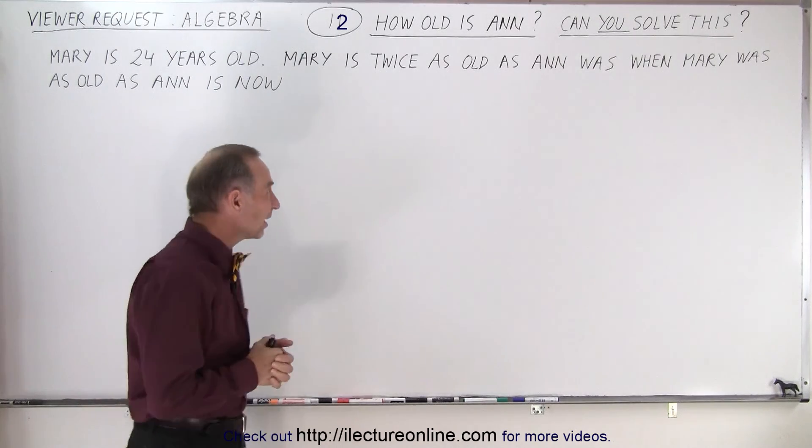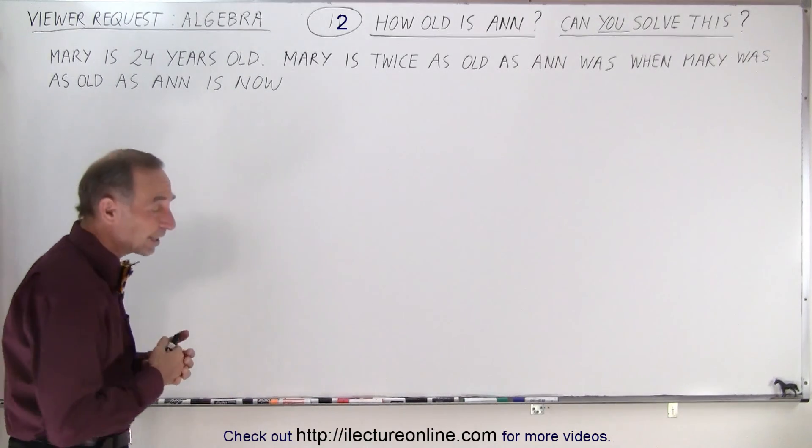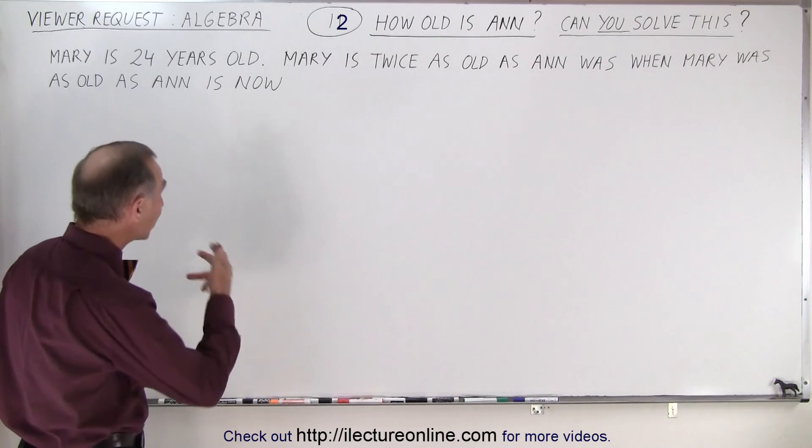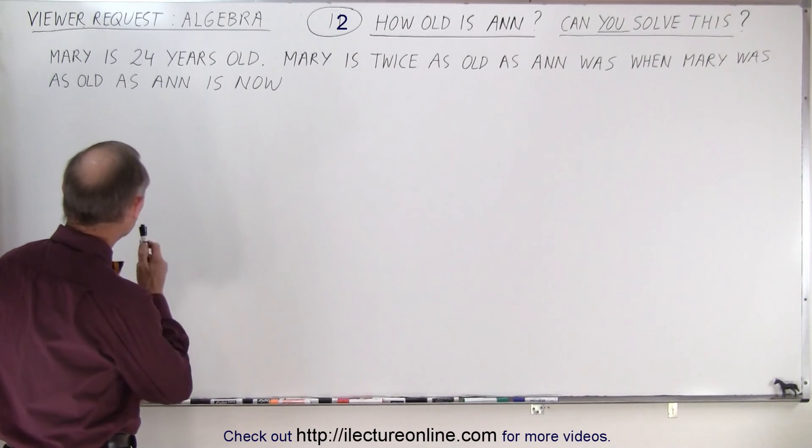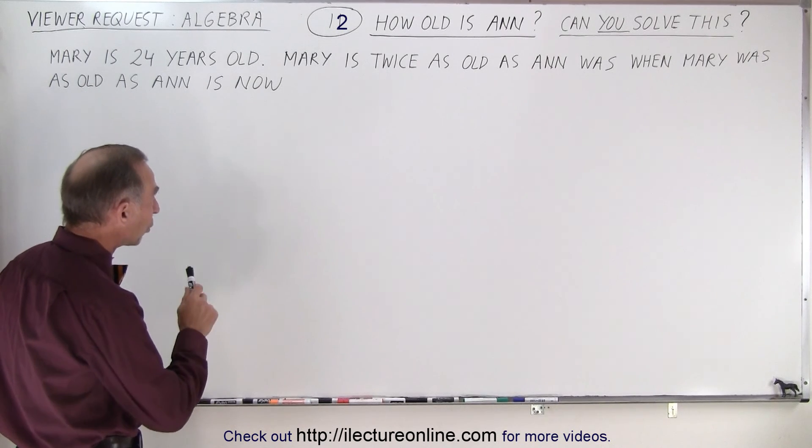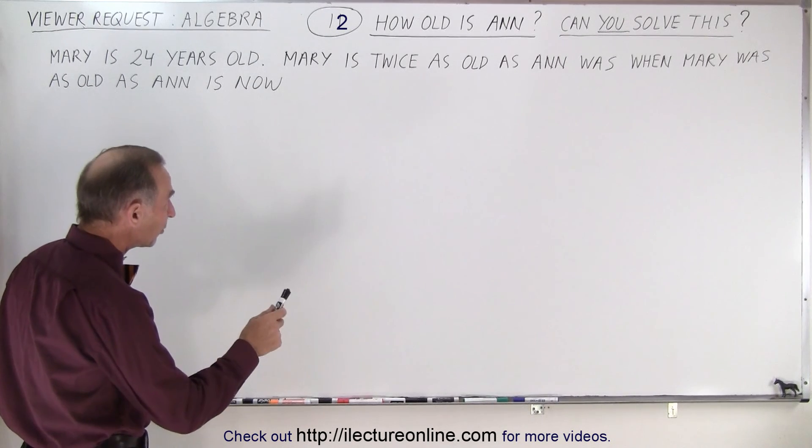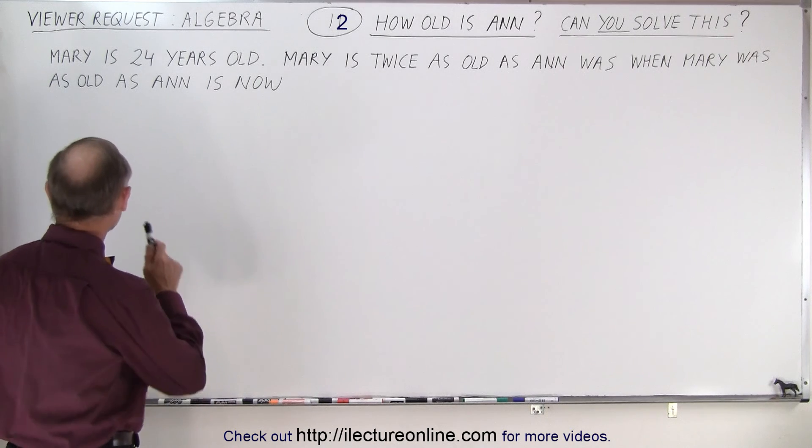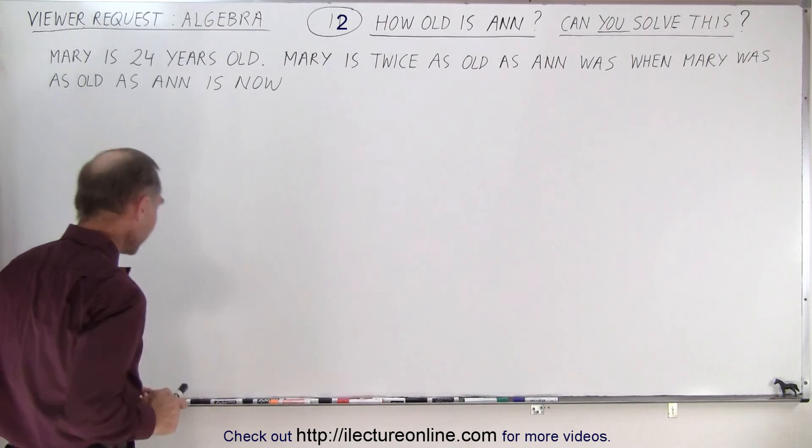It's an algebra problem and it deals with people's ages. So let's read the problem. It says that Mary is 24 years old. Mary is twice as old as Anne was when Mary was as old as Anne is now.